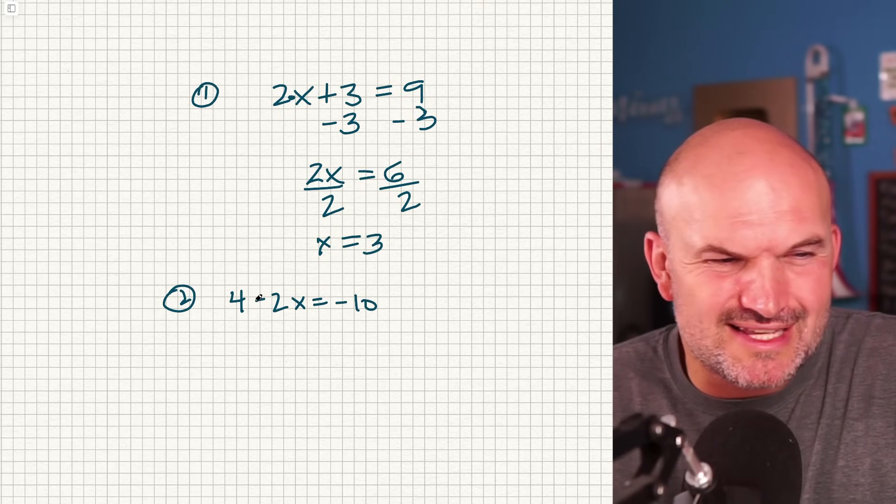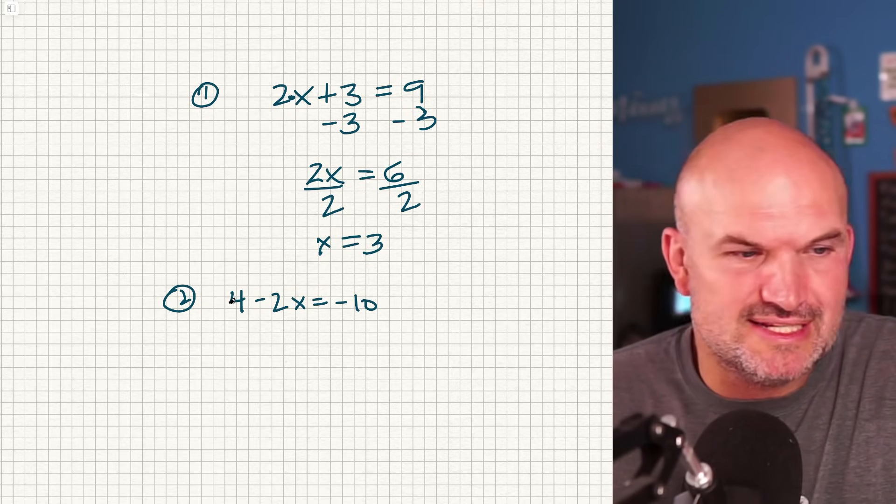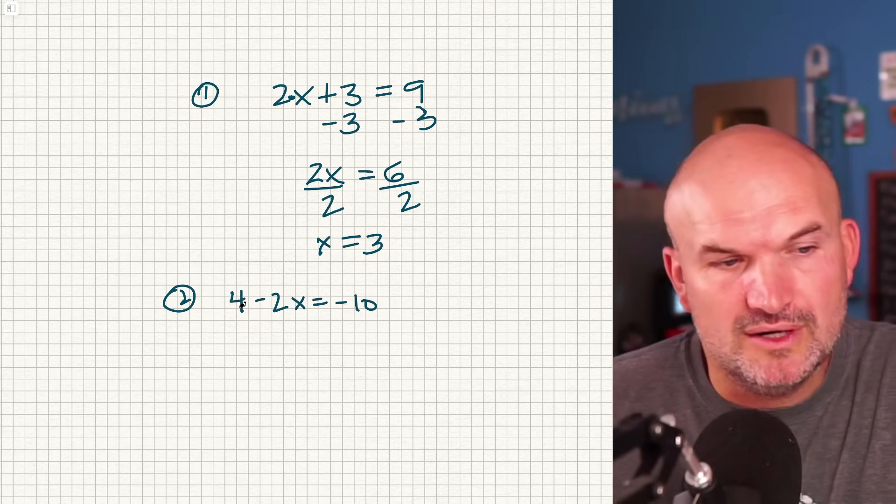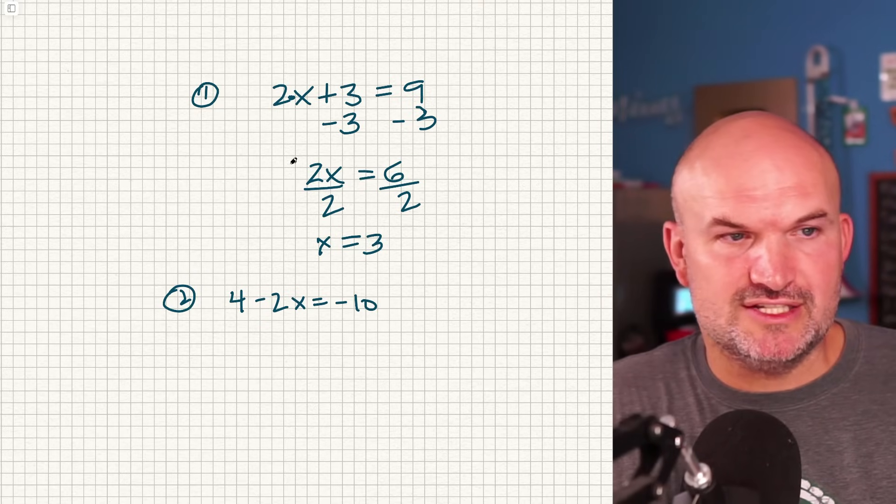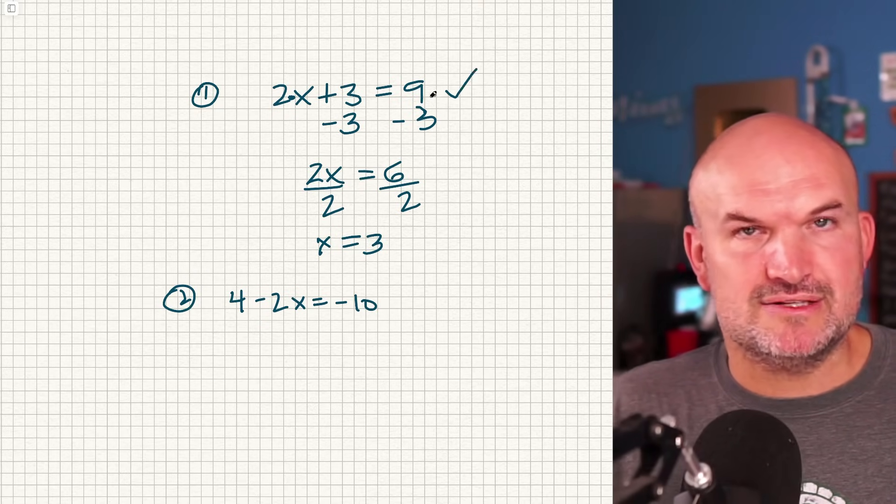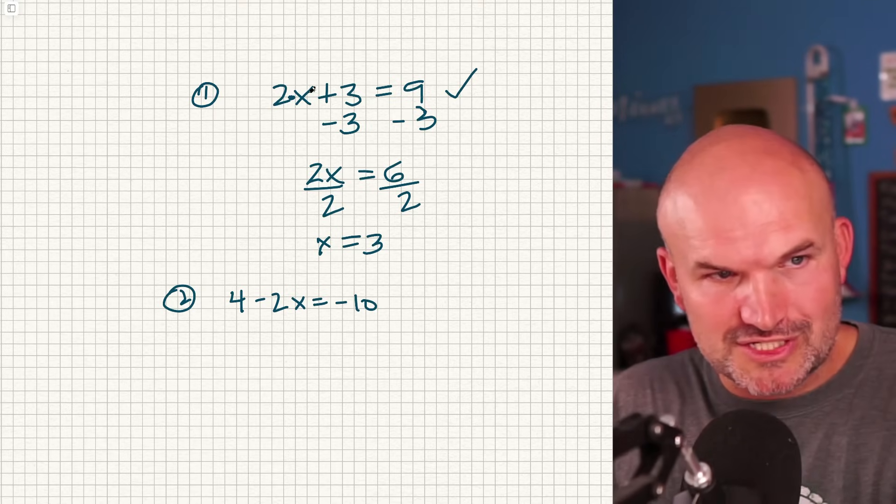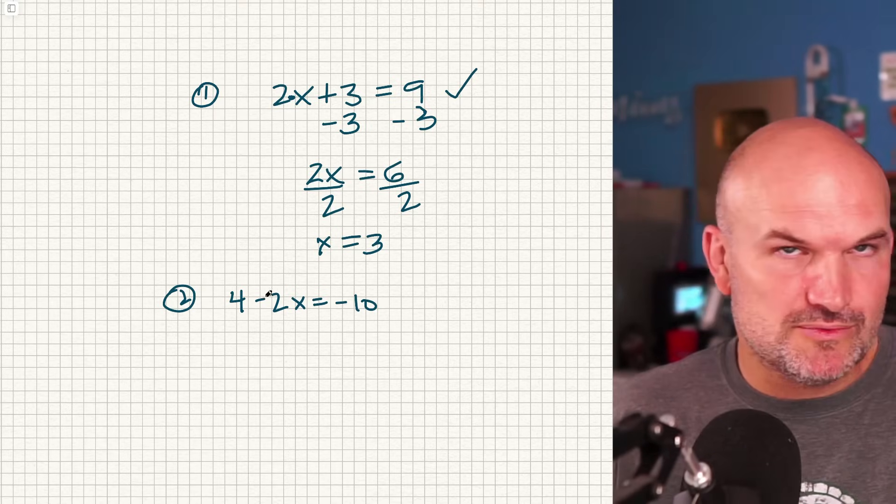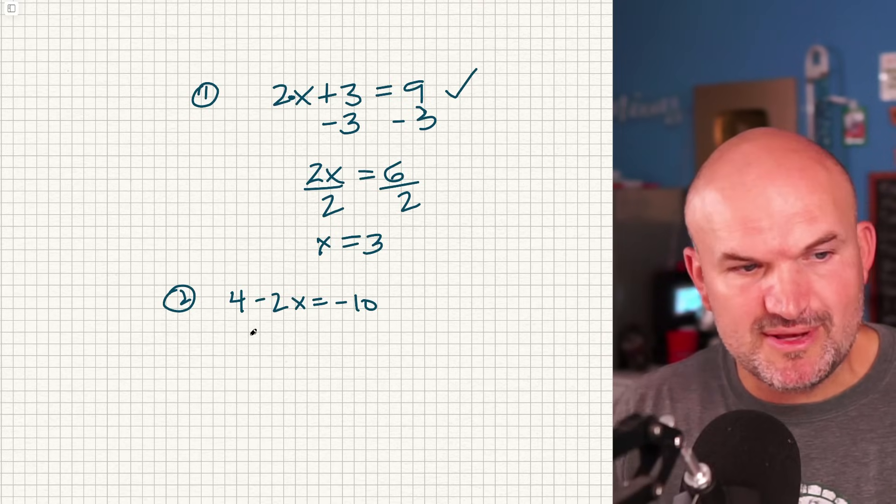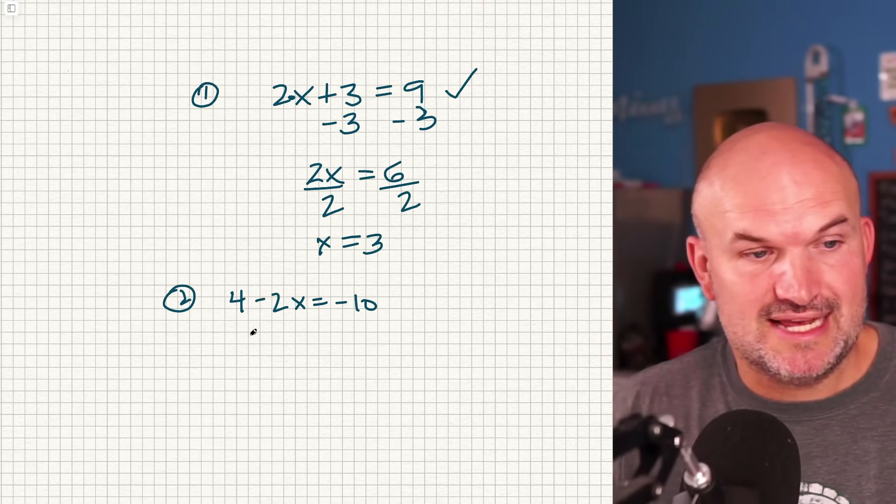But this 4 is like, am I subtracting the 2? Is this a positive 4 or a negative 4? So the way I like to tell my students to do this is always rewrite it in this format. I want the x first and then my constant. So here's what we have to make sure we are, if we're going to be rearranging things, we need to make sure we keep those signs the same.